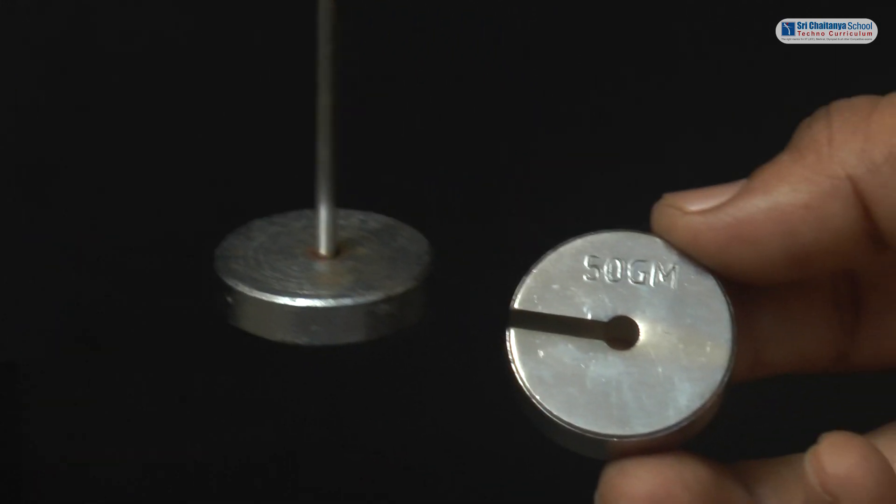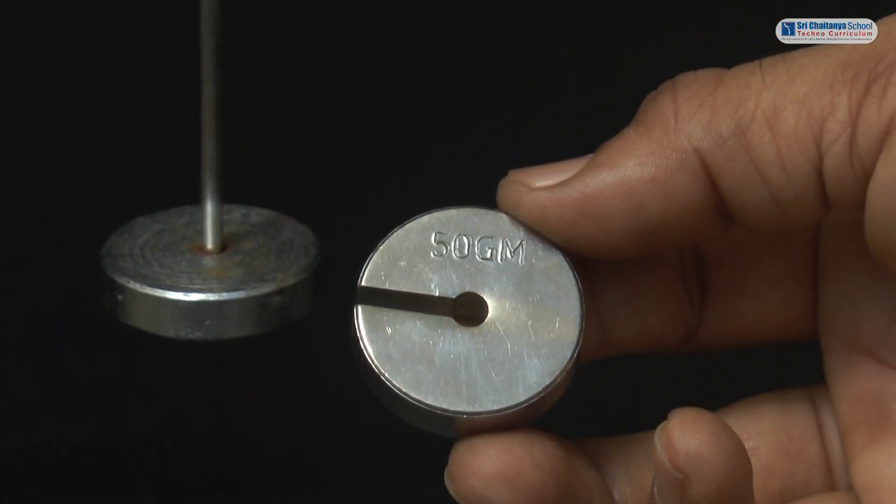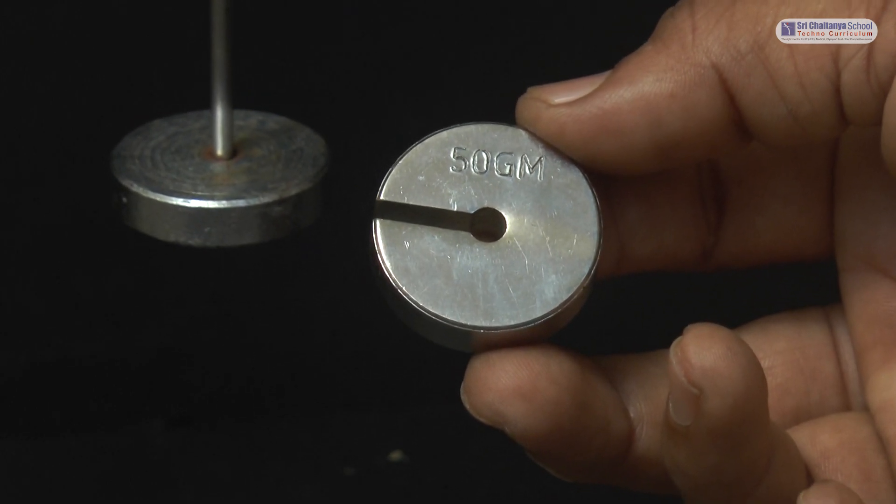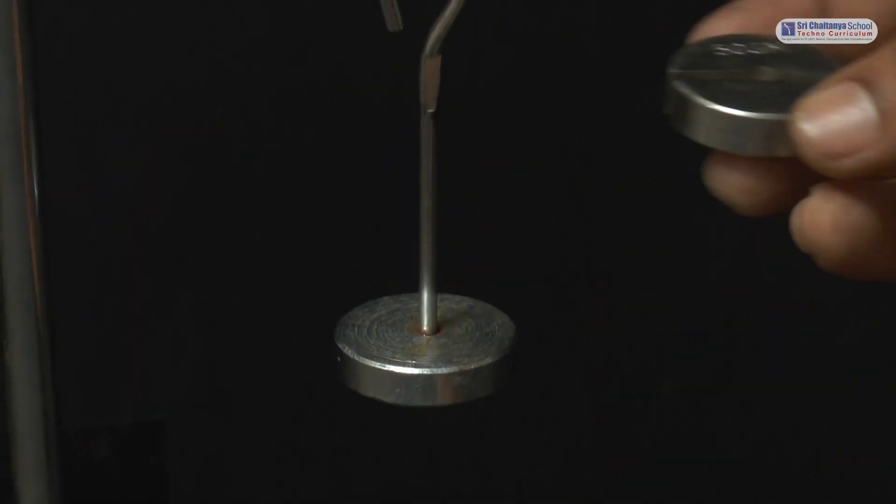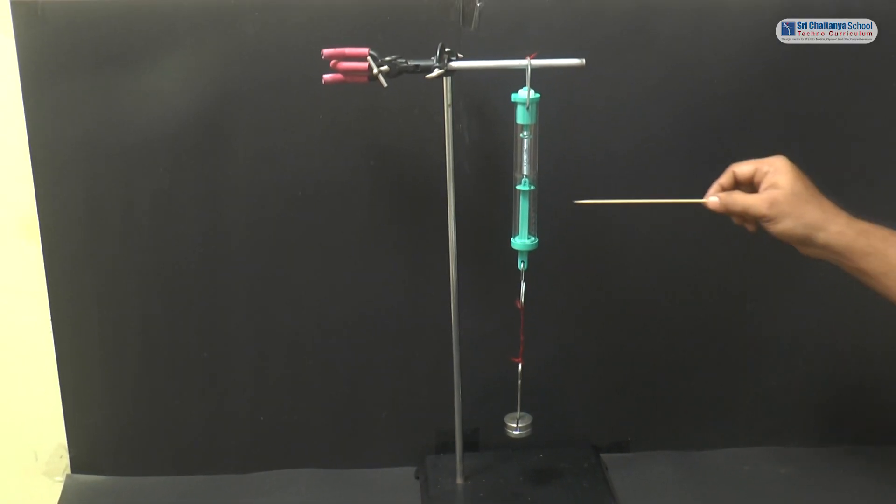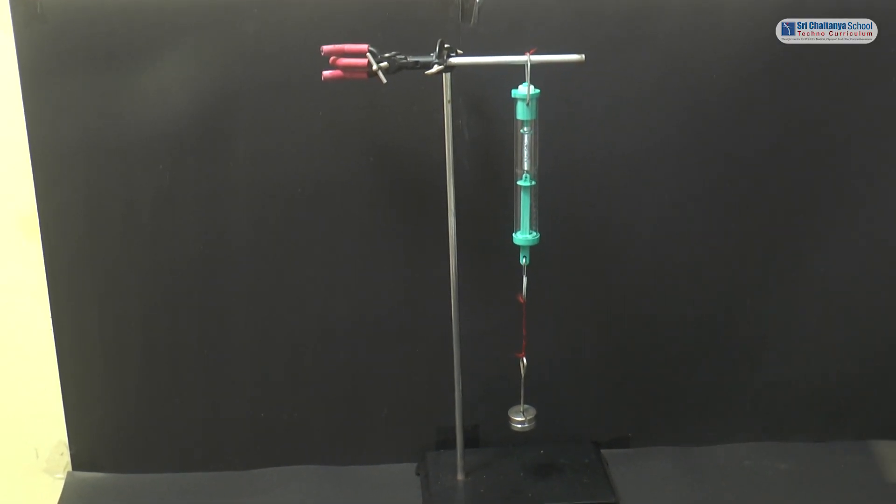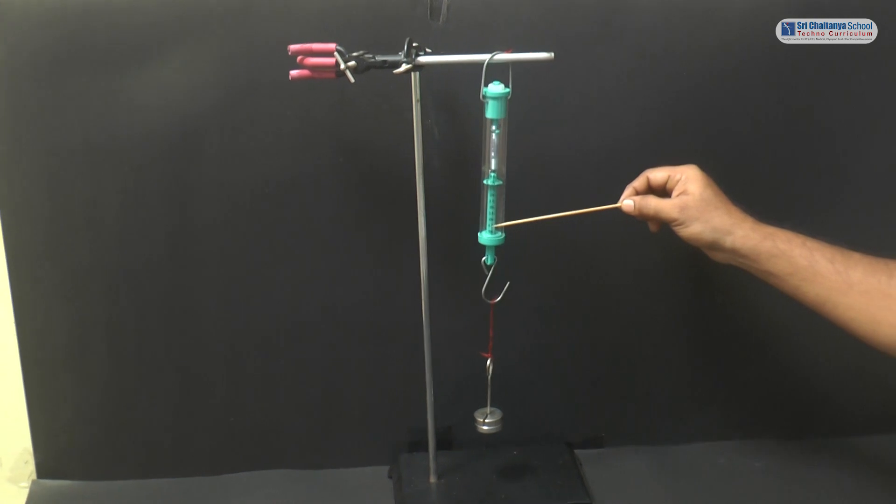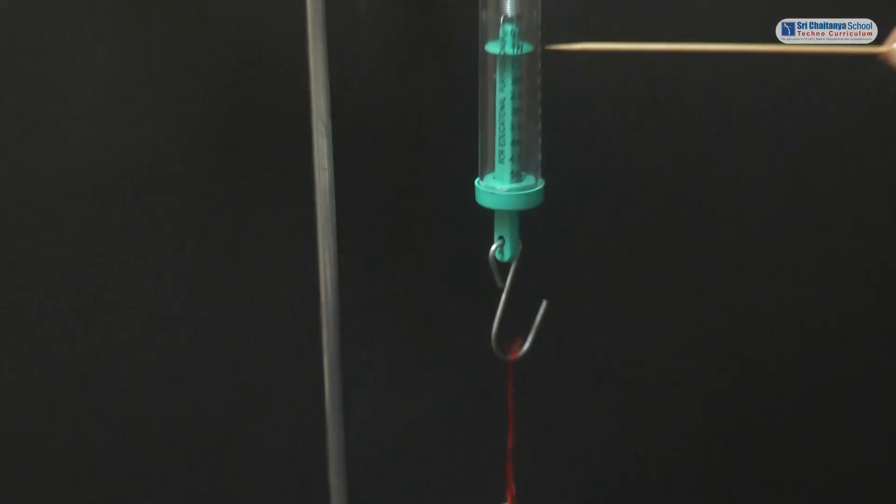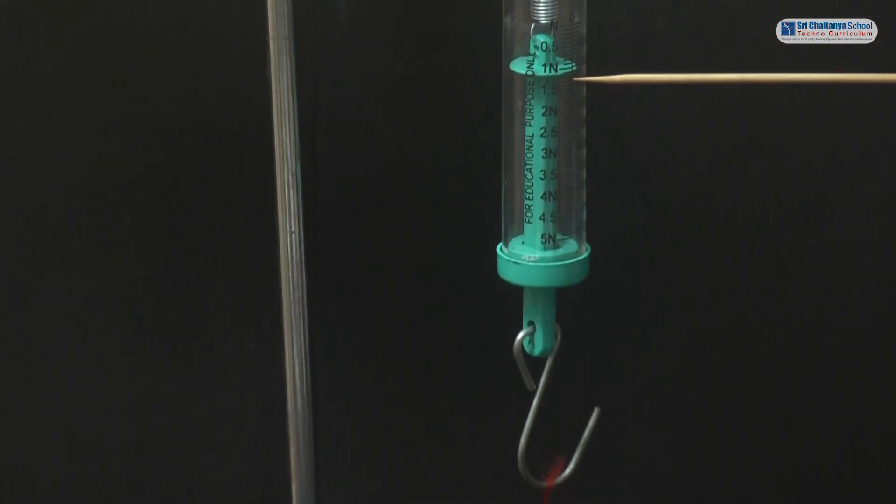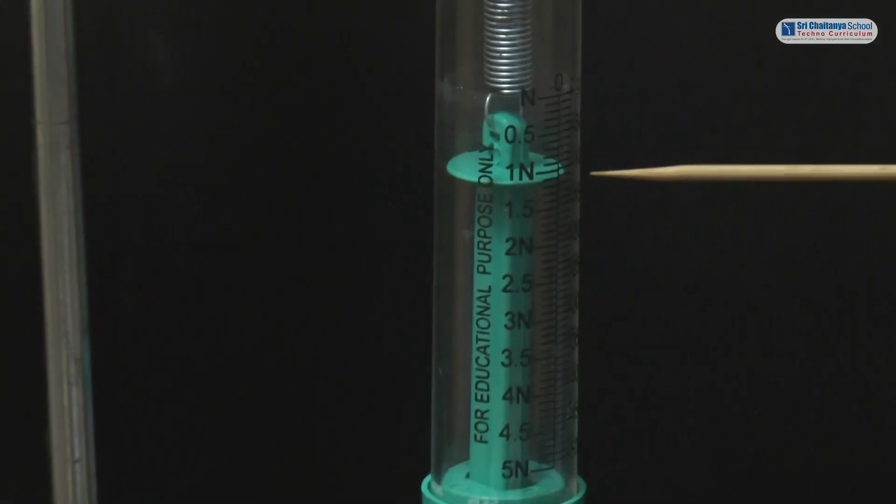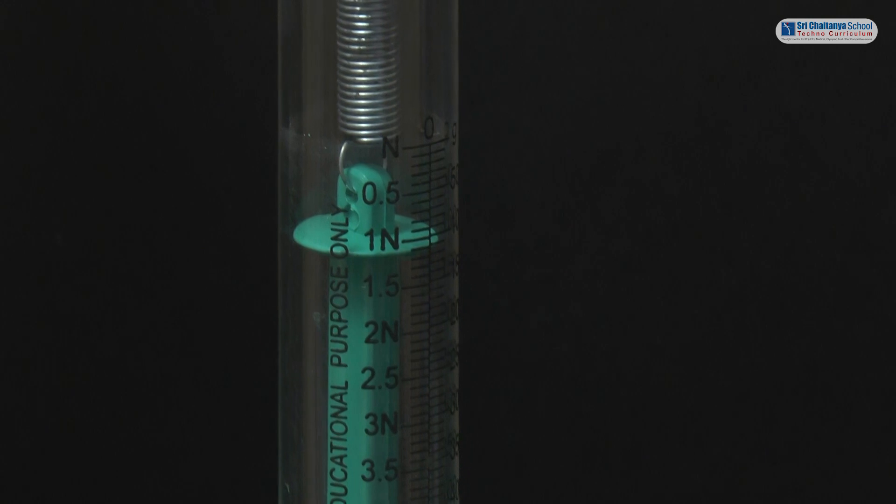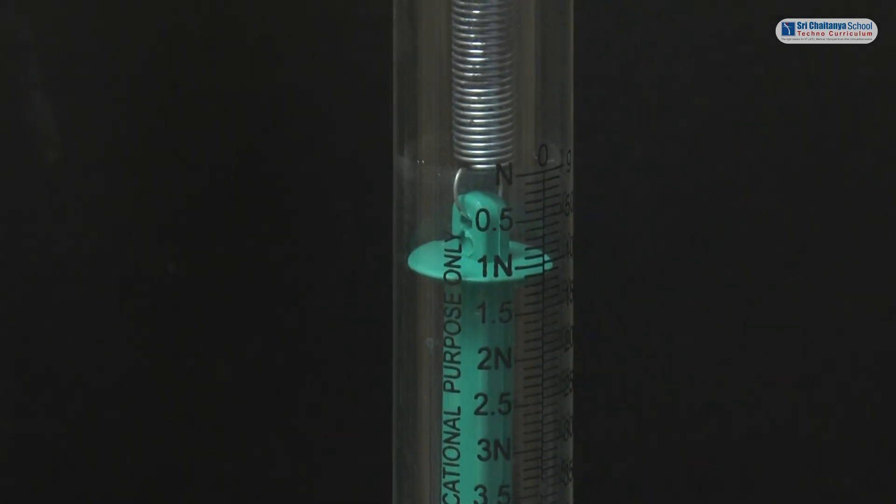Now, put some small weights like 50 grams on the weight hanger and note the readings of the spring balance. See the reading in the spring balance. Here it shows nearly about 1 Newton.